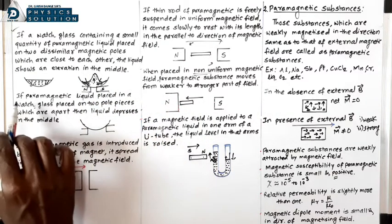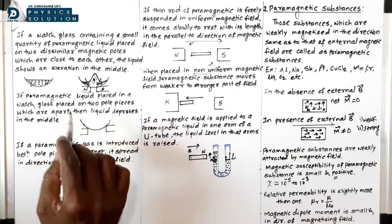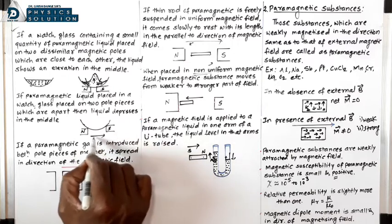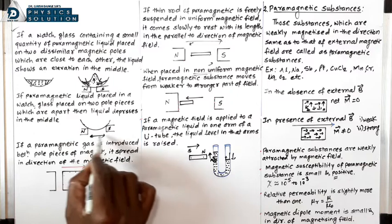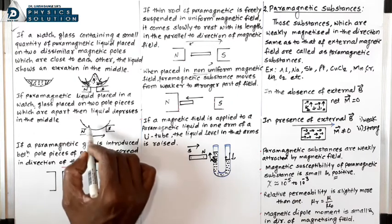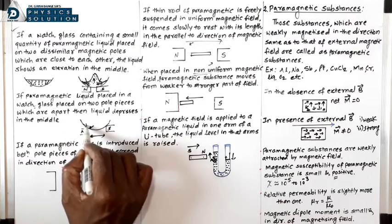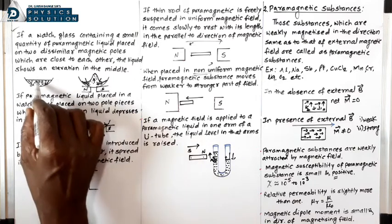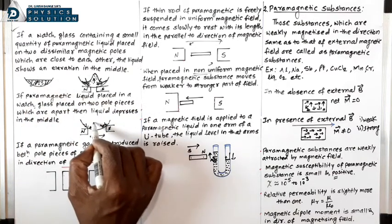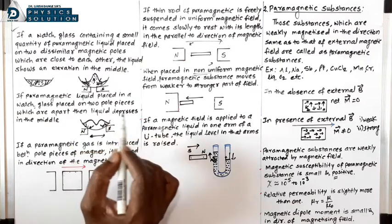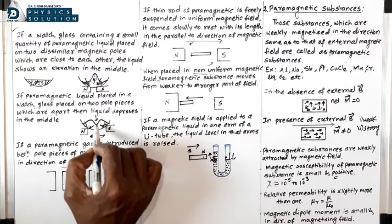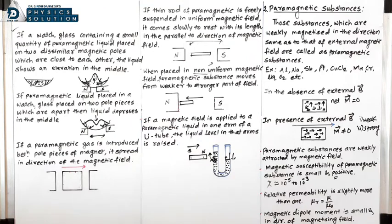However, this observation changes when the pole configuration is altered. The liquid molecules get attracted from both sides, so the central and middle-part molecules are attracted toward both poles. As a result, a depression is produced in the middle of the liquid surface — this is the observation in that case.